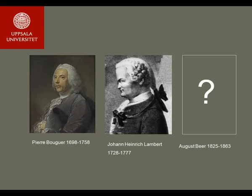Johan Heinrich Lambert was a Swiss mathematician, physicist, and astronomer who introduced hyperbolic functions into trigonometry. In 1760 he published 'Photometria', presenting the law of light absorption—the Beer-Lambert Law. And finally August Beer, a German physicist and mathematician, finalized the Beer-Lambert Law, which is applied to all light including near-infrared light with a wavelength of 700 to 1400 nanometers.